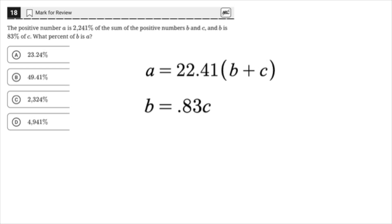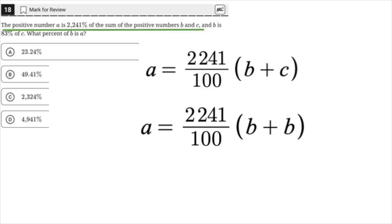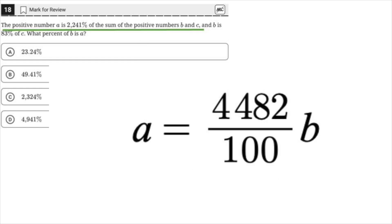If B were 100% of C, then our equation would look like this. A equals 2,241 divided by 100 times B plus B. That's the same as A equals 2,241 divided by 100 times 2B, which is the same as A equals 4,482 divided by 100 times B.